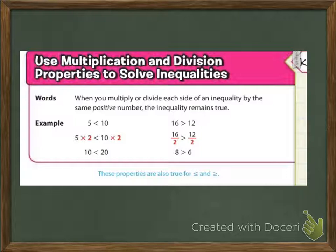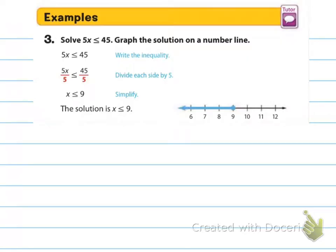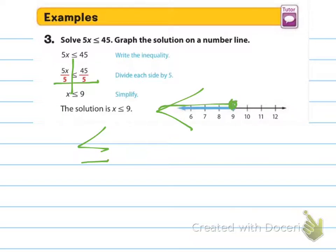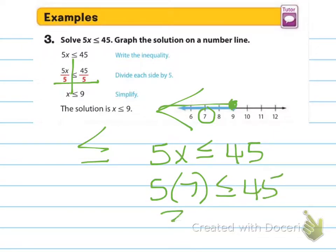Using multiplication and division properties to solve inequalities works the same way — multiply or divide both sides by the same number to keep the inequality true. For 5x is less than or equal to 45, divide both sides by 5 using our t-chart, and you get x is less than or equal to 9. Closed circle, arrow going left. Check with 7: 5 times 7 is 35, and 35 is less than or equal to 45.